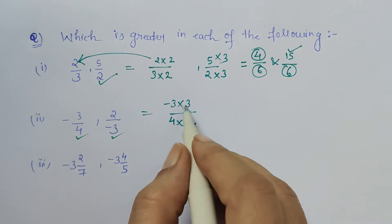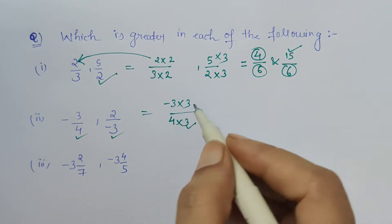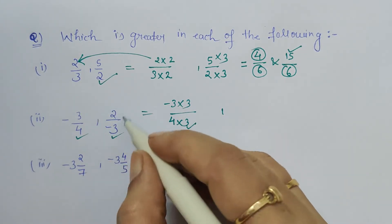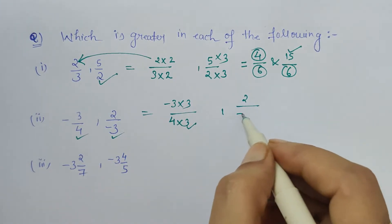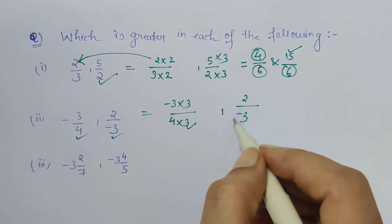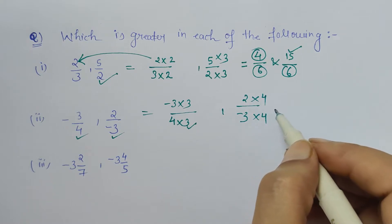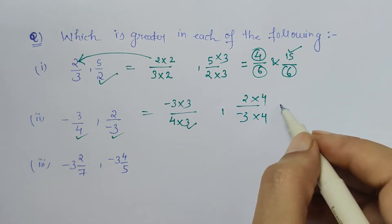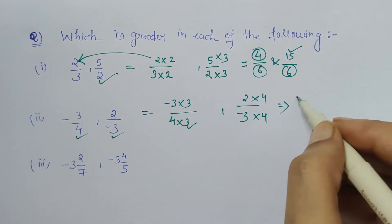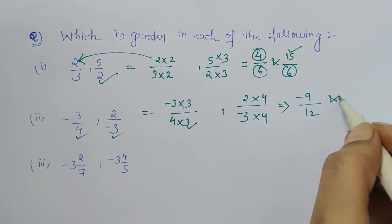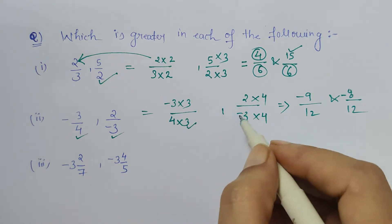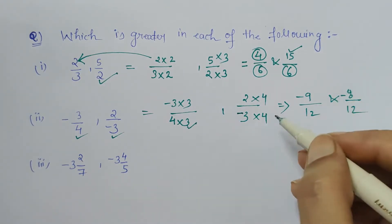And the other fraction is minus 2 by 3. So what will make this denominator 12? By multiplying it with 4. Similarly, numerator also gets multiplied by 4. Now the next step would be minus 9 upon 12 and minus 8 upon 12.